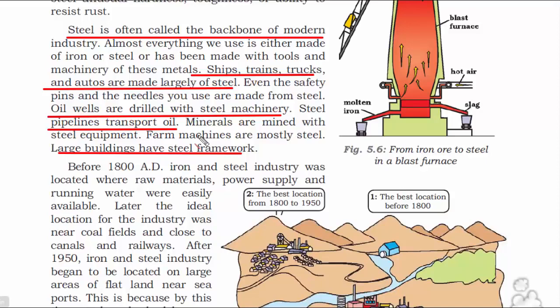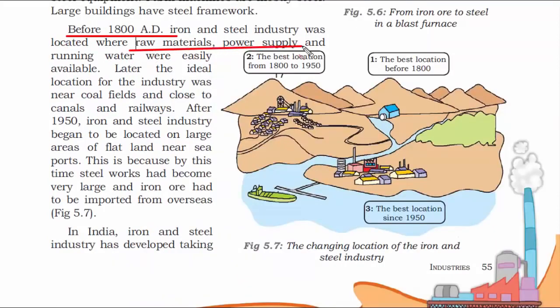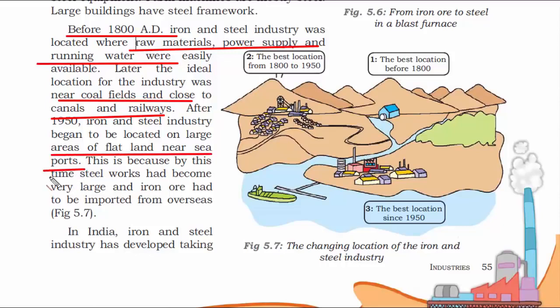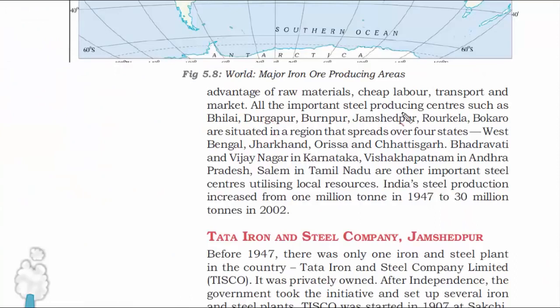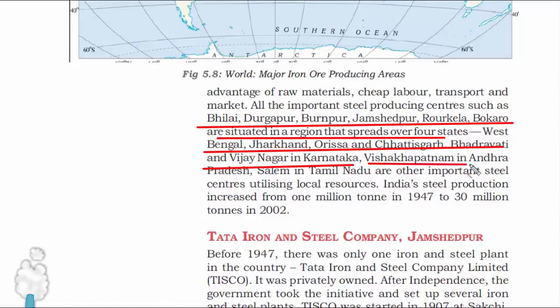Here's a cool story. Before 1800 AD, iron and steel industries used to be located where raw material, power supply, and running water were easily available — common sense to create an industry next to where raw materials are ideal. But later, the thinking got changed. The industry was near coal fields and close to canals and railways for transportation. After 1950, they started shifting the industry and creating plants on flat land near seaports. This is because we now export a lot of steel through ships, since ships are the cheapest way of transportation and you can export bulk iron to different nations. The picture shows how industries shifted from pure landmass to next to water bodies. Some of the iron and steel industries in India are marked on the map — just pause the video and have a look.